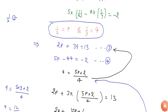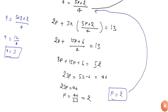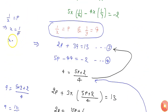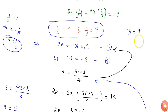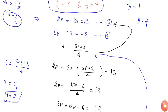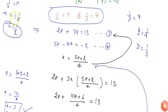Since 1/x equals to p, I can write x equals to 1/p, and the value of p is 2, so x equals to 1/2. And since 1/y equals to q, and q is 3, I can write y equals to 1/3. So we have x equals to 1/2 and y equals to 1/3.